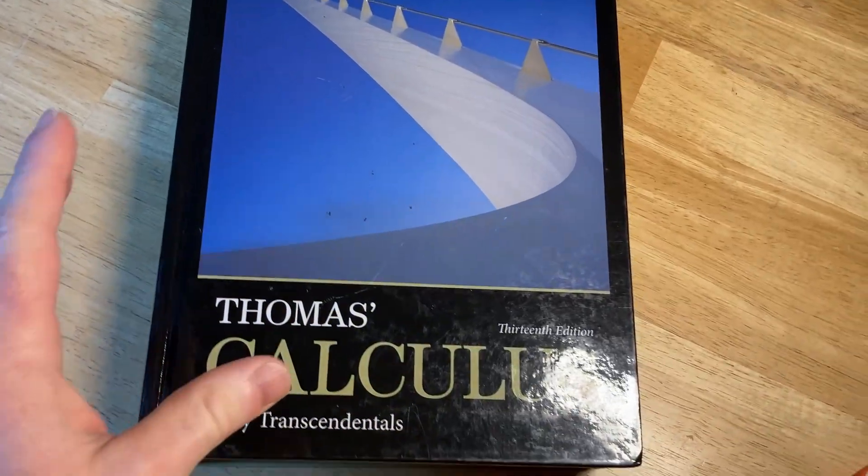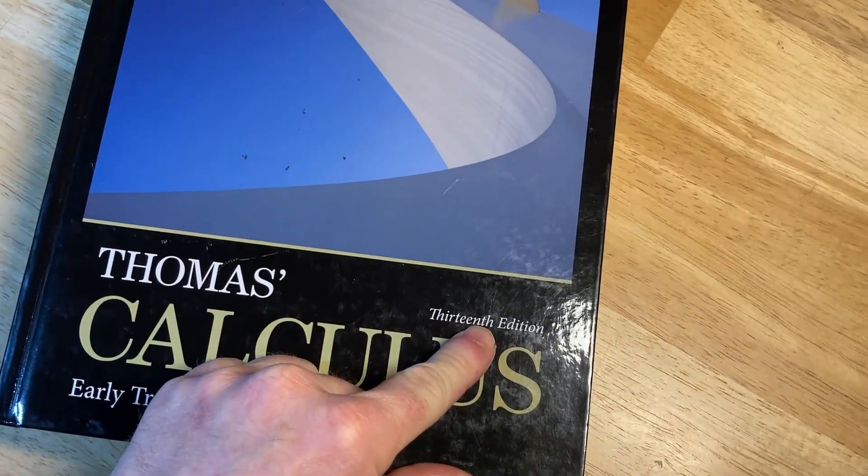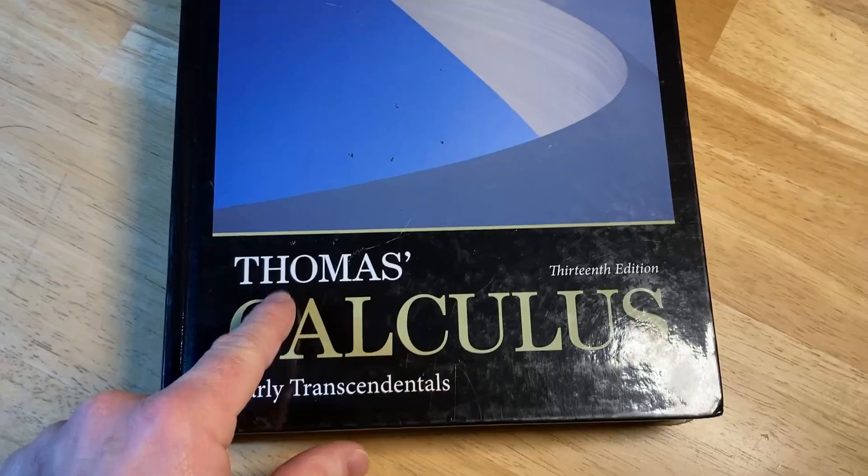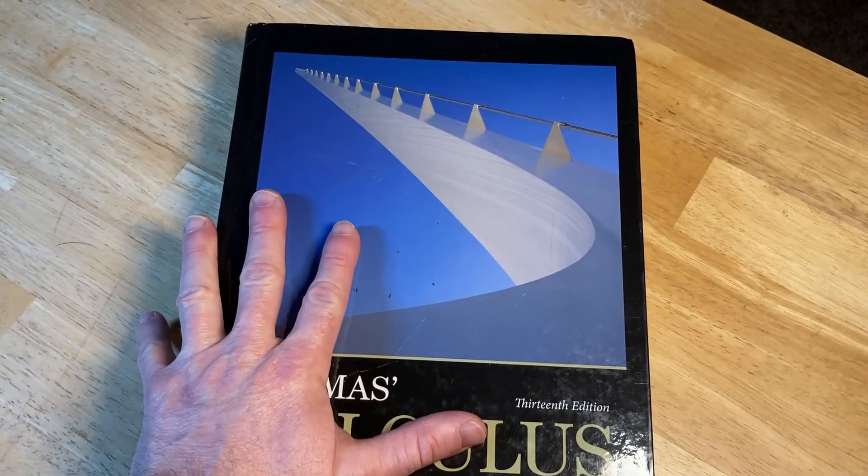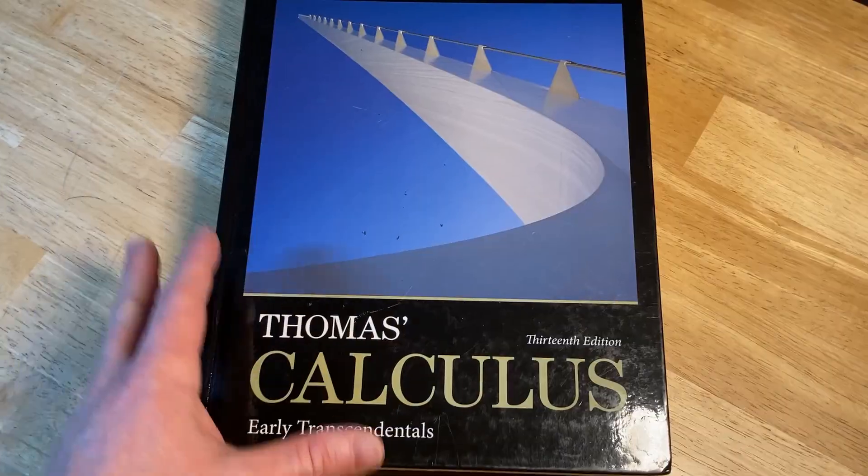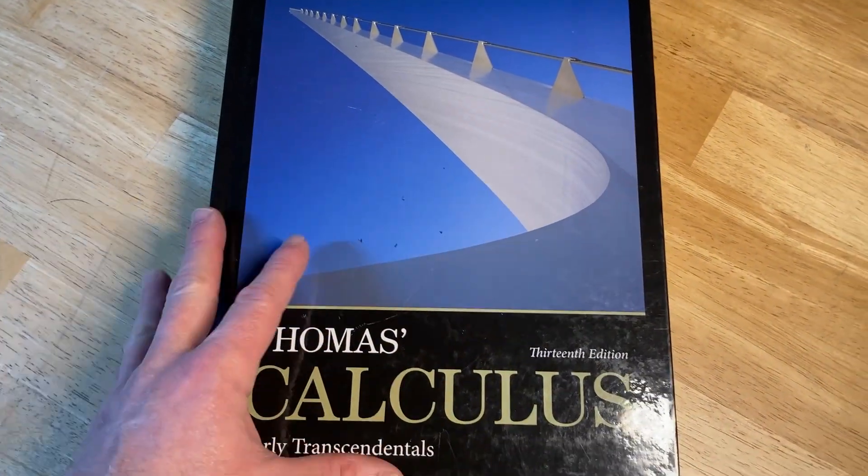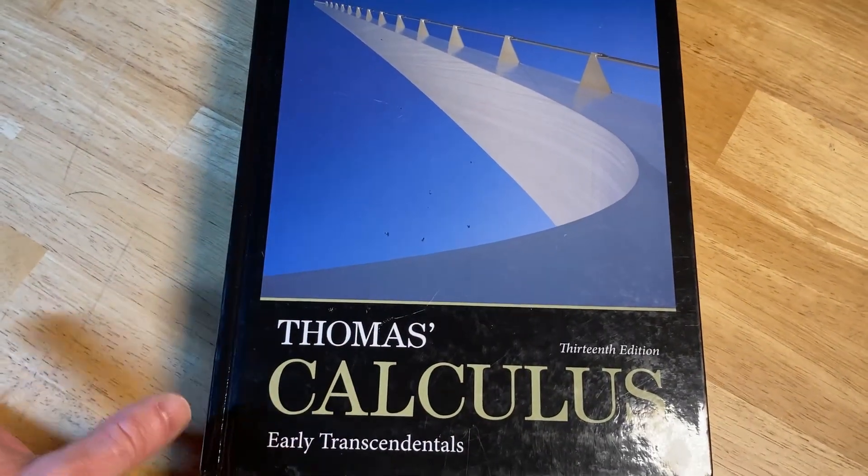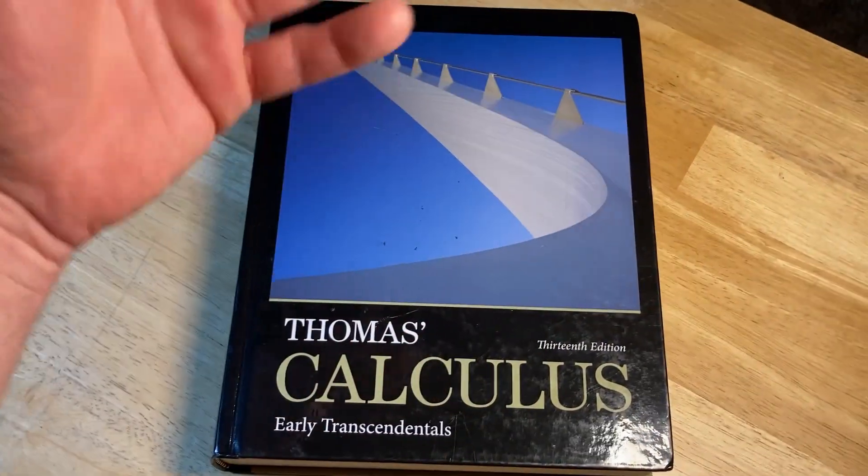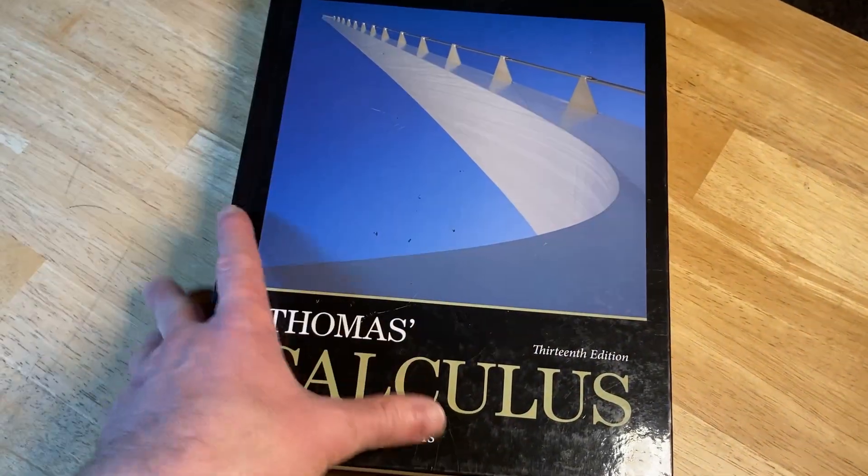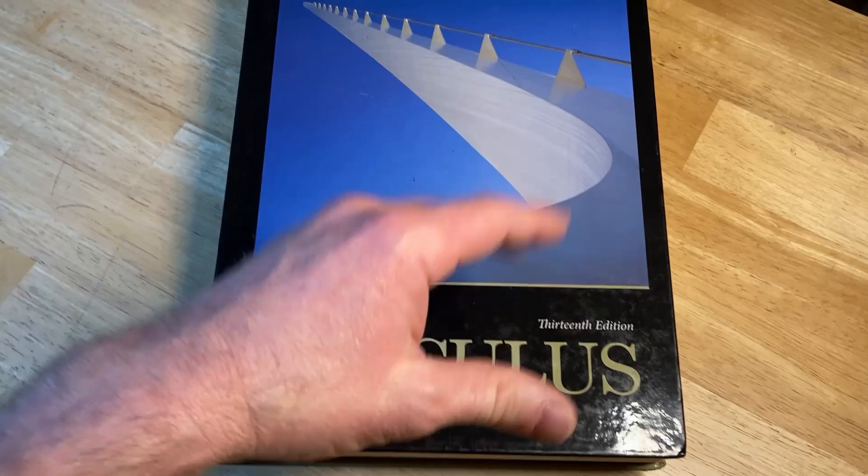This one is legendary. It has been around for a long time. Look at this 13th edition and notice the name of the book. It's called Thomas Calculus. That's because this book is based on the work of George Thomas. George Thomas wrote a book called Calculus many, many years ago. I have some older editions of his book and it has been revised multiple times and this is the result.